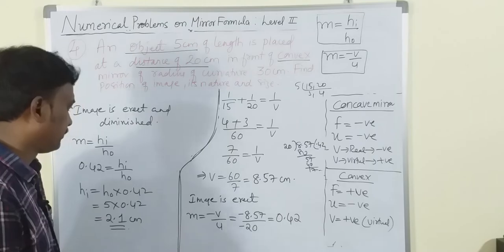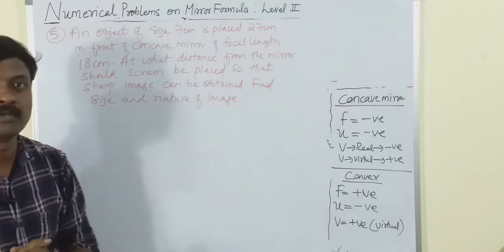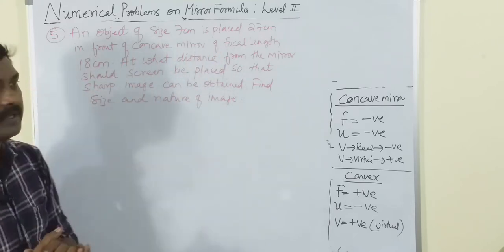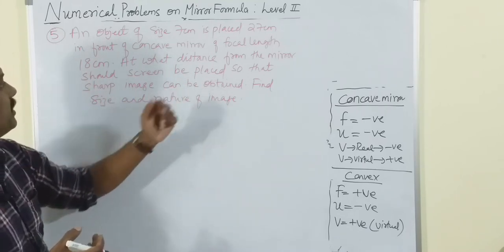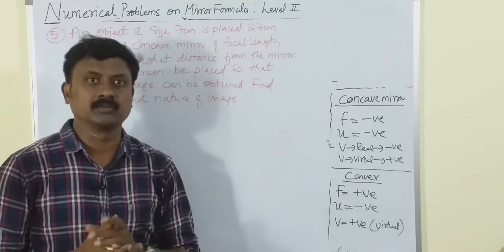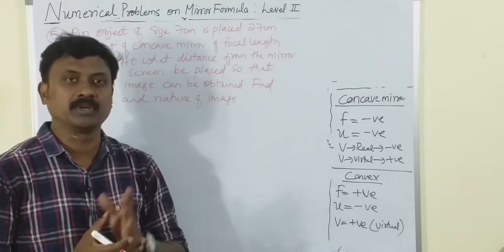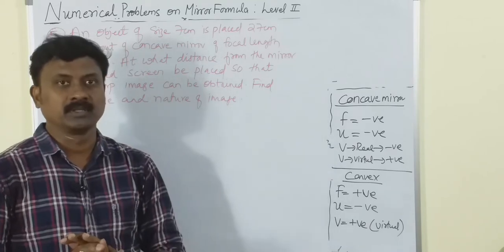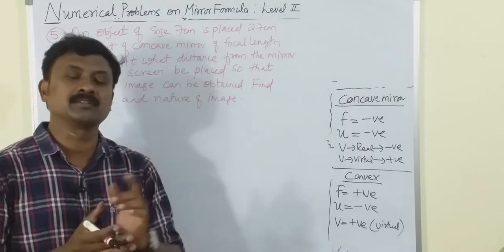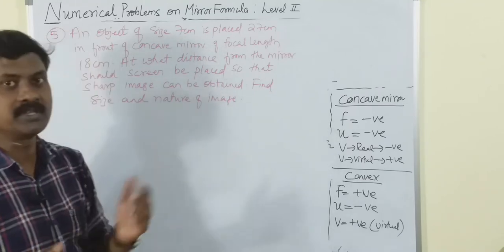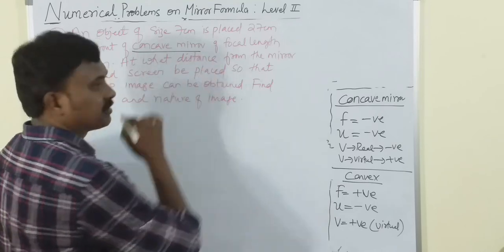Next question: an object of size 7 centimeters is placed 27 centimeters in front of a concave mirror of focal length 18 centimeters. At what distance from the mirror should the screen be placed? They are indirectly asking about image distance, since the screen is placed where the image forms.